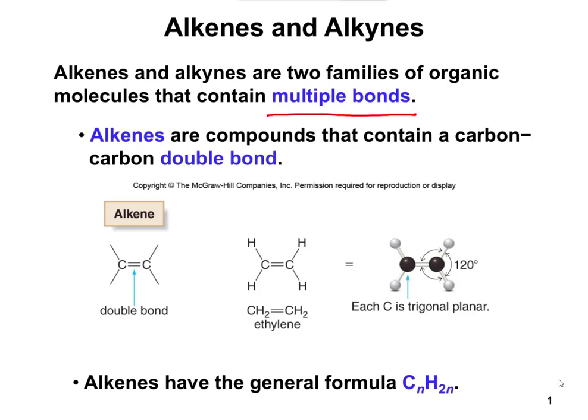Starting off with alkenes — a double bond — and whenever we talk about a double bond, we're specifically talking about a carbon-carbon double bond. This changes some of the geometry. With alkanes, all of the carbons were tetrahedral because they had four bonds. Whenever you have a carbon-carbon double bond, each carbon is attached to three different things. In ethylene, this carbon is attached to carbon, hydrogen, and another hydrogen, giving it a trigonal planar shape.